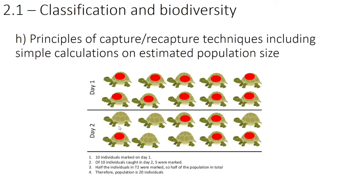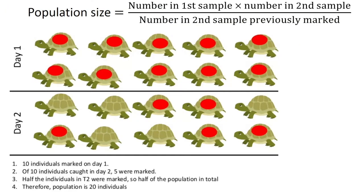So we're actually going to be describing this picture in a lot more detail. We have here some turtles. This technique is for animals — capturing and recapturing animals. We can estimate a population size of animals by marking animals, releasing them back into the wild, and then recapturing from the same area, and then doing some maths to estimate population size.